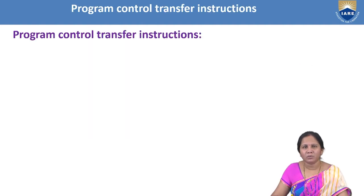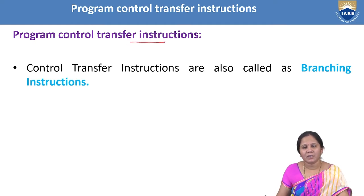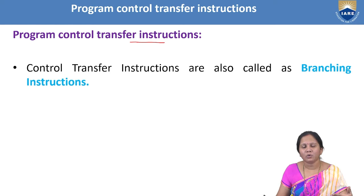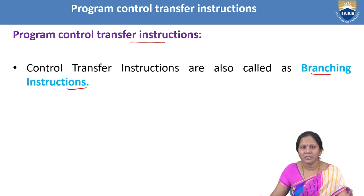Coming to the Programme Control Transfer Instructions, when this type of instructions are executed, the control will be transferring to some address what we have specified in the instruction — or we can also call it as the predefined address specified in the instruction. That is why Programme Control Transfer Instructions are also called as Branching Instructions, because the control will be branching to some predefined address or the address specified as part of the instruction.